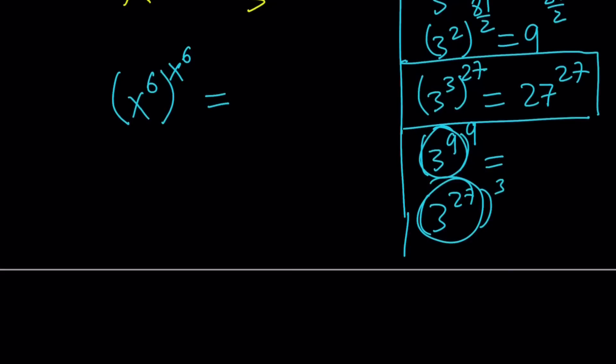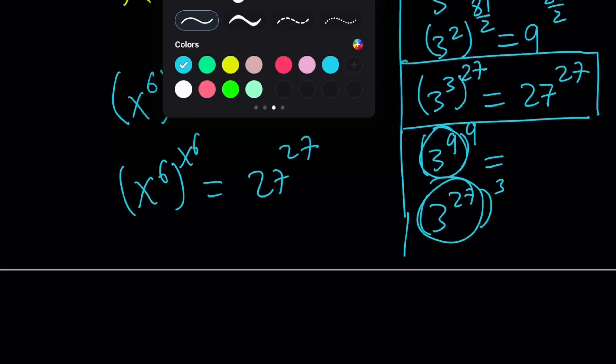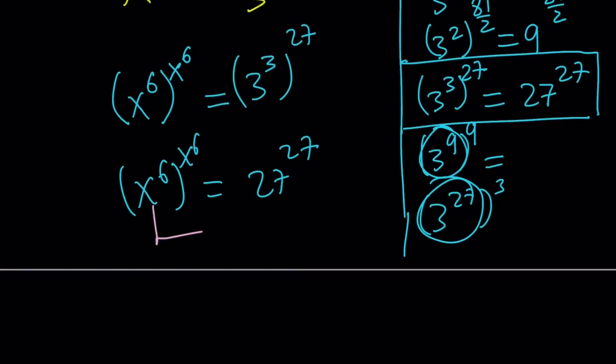We're going to write the 3 to the power of 81 as 3 to the third to the power of 27. So, 3 times 27 is 81. And then, we're going to turn this into 27 to the power of 27. And from here, one-to-one correspondence tells us that x to the power of 6 must be 27. And that gives us two solutions.